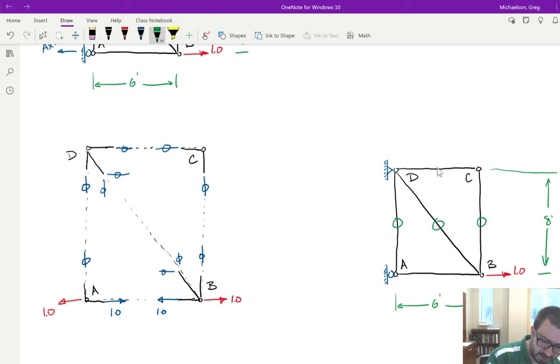So there's going to be a lot of zero force members. So what's going on with this truss analysis? Zero, zero, zero, zero. And then this member is one in tension. That's your truss analysis.